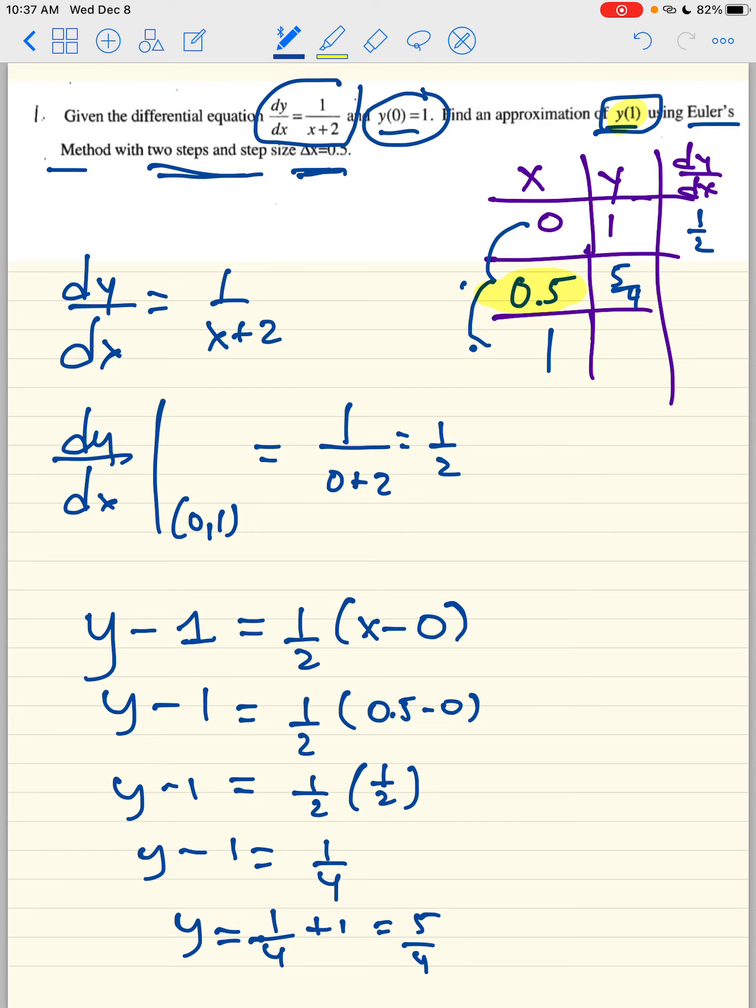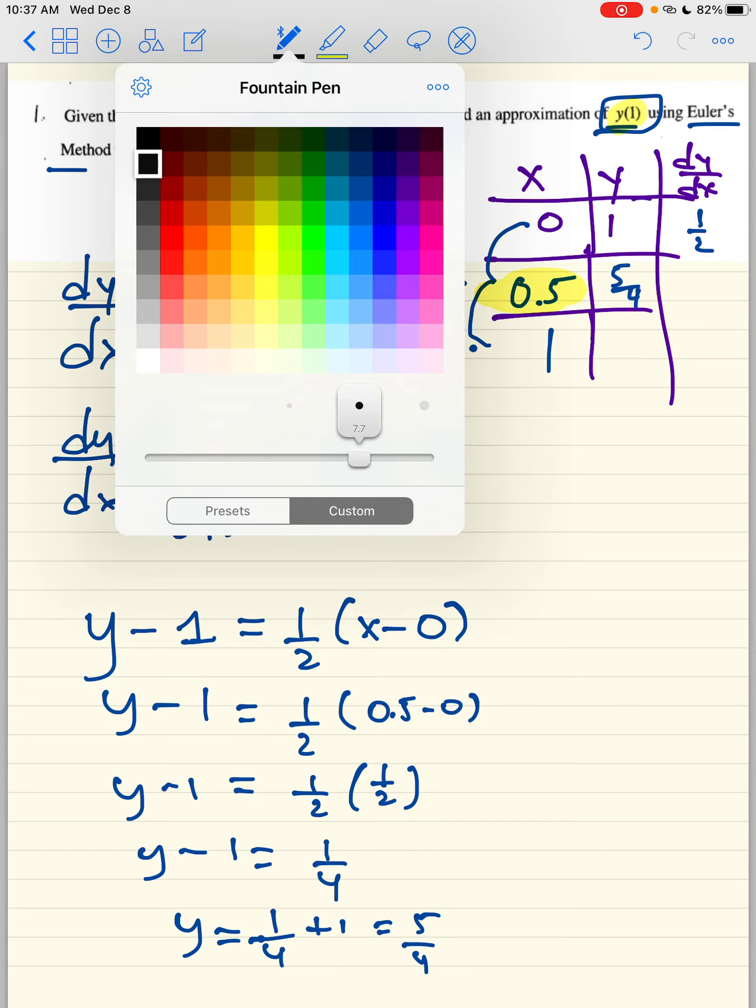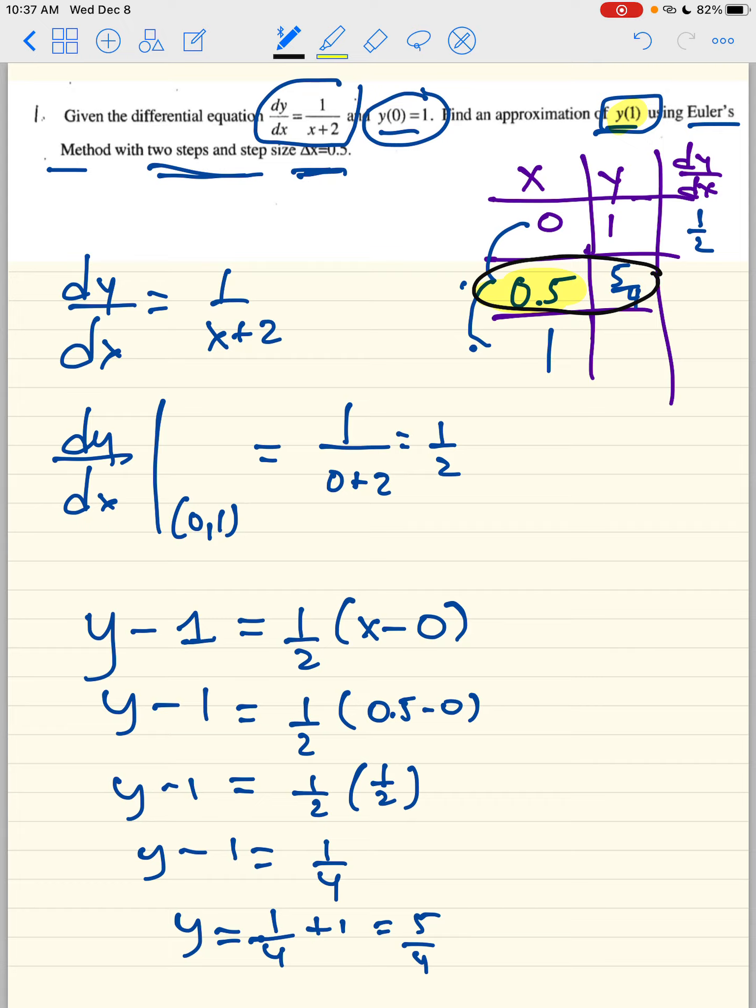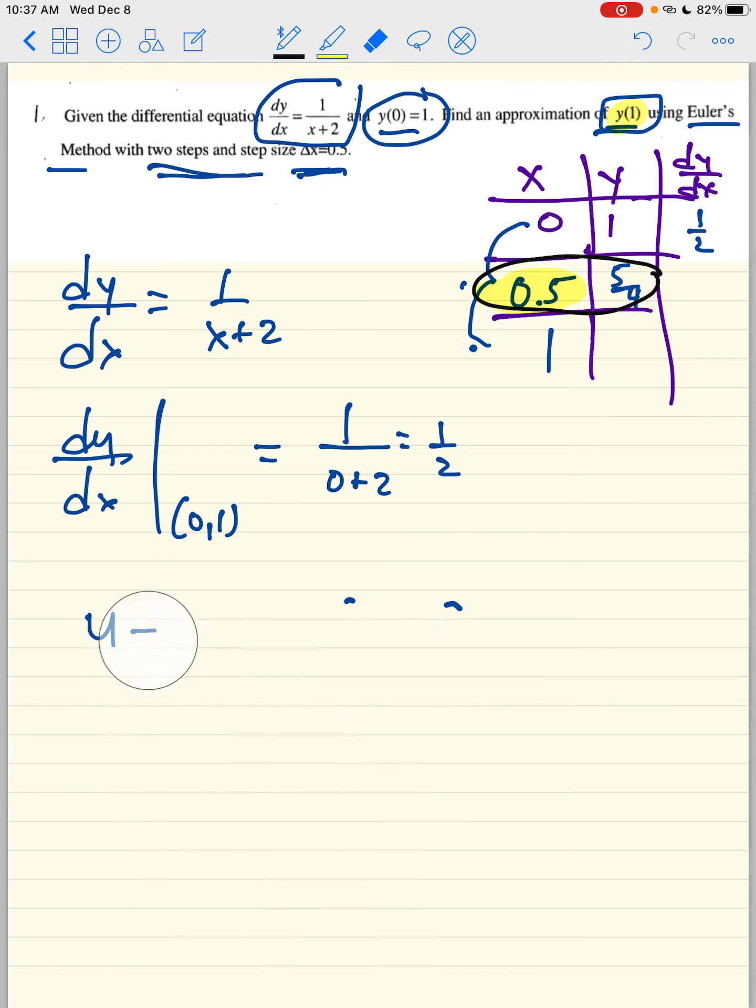So 0.5 gives you 5 fourths as an approximation. So now what we're going to do is we're going to repeat the process using a new point, 0.5, 5 fourths. I'm going to have to erase this so you can pause the video if you need help.